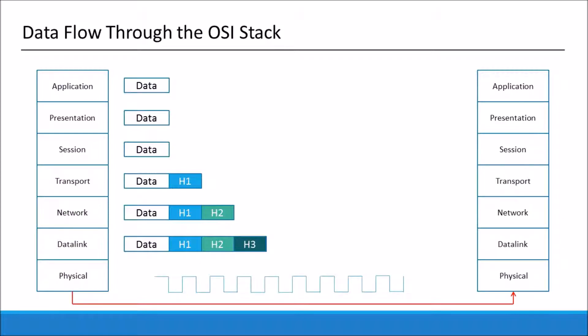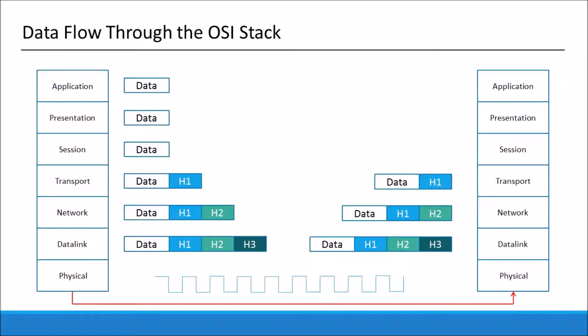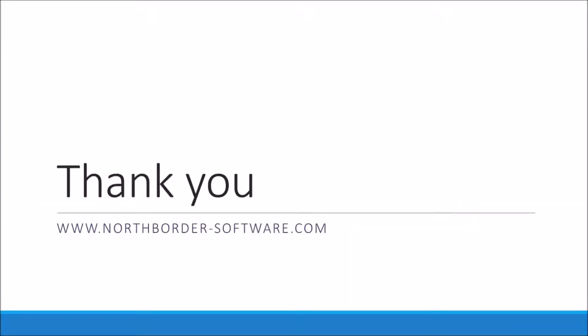That frame then goes on its way as bits. When it gets to the receiving end of the data link, all we need to do is strip those headers off and pass the data back up the layers to the application. That's really the introduction to the OSI model. I'll be doing more technology primers looking at some of these technologies in far more detail, walking through the headers and how they work — including Ethernet, IP, and a few others.